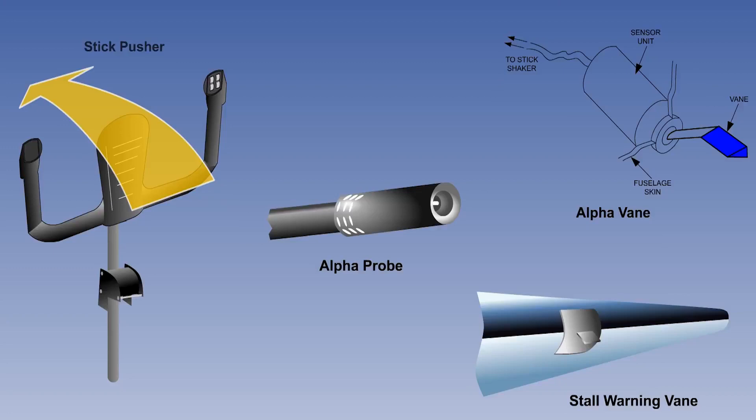If, however, a particular wing design is likely to stall too abruptly, it will be necessary to provide some sort of artificial pre-stall warning or even a stall prevention device.